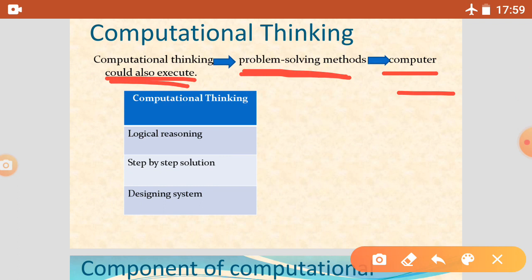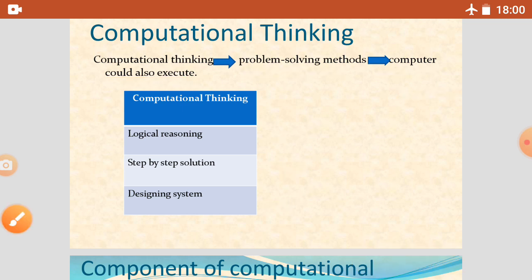For developing this type of thinking, what are the key elements? The first is logical reasoning — we should have logic, then we can solve a problem. The second thing is a step-by-step solution. And the third is designing a system. If we are trying to solve the problem, there should be a plan and a design to solve the problem.